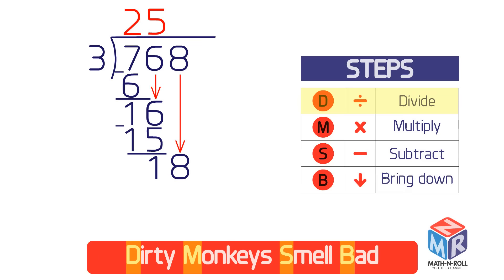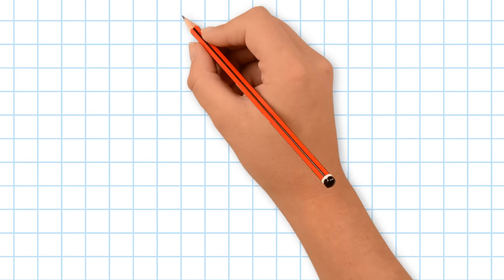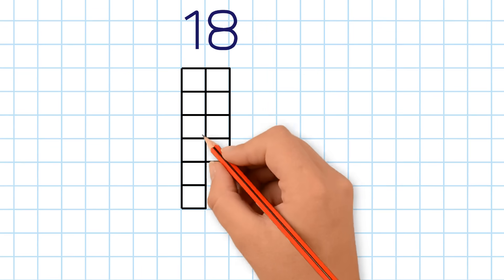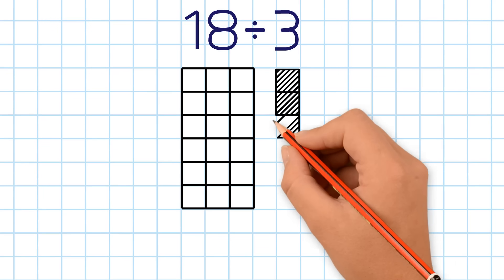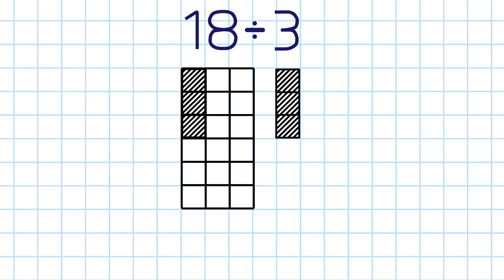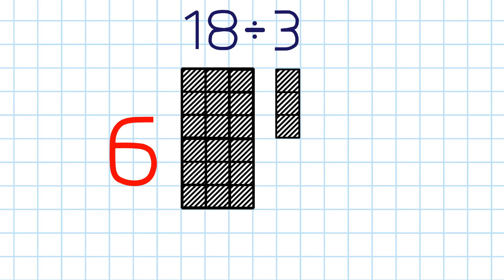Another cycle is complete, so begin the next cycle by asking how many times 3 goes into 18 — that is, what's 18 divided by 3? The answer this time is 6.